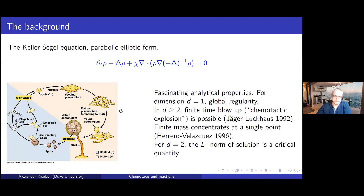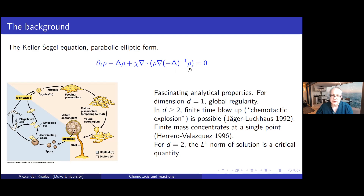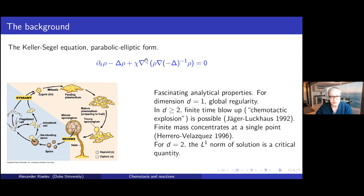That's the Keller-Segel equation — it's an equation for the density of mold or bacteria. The density diffuses and there is this nonlinearity, the chemotactic term. It's in so-called parabolic-elliptic form: the density produces a chemical, and we can think of the Laplacian inverse of rho as the chemical c. The assumption is that the chemical diffuses and stabilizes much faster than other timescales, and the term tells us that density tries to move toward higher concentration of this chemical.